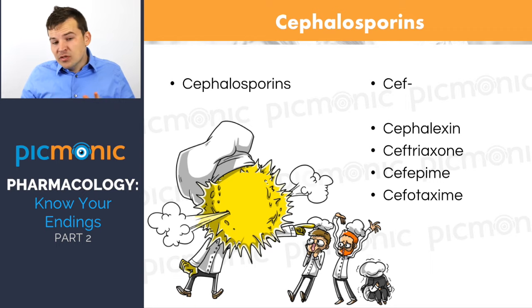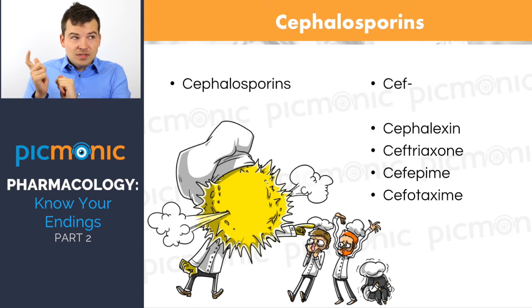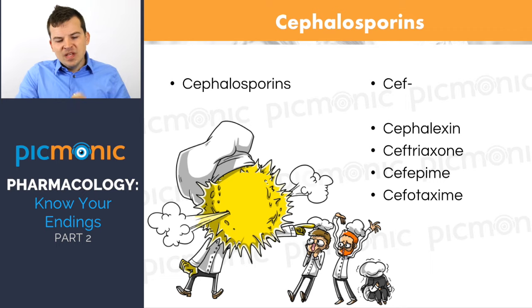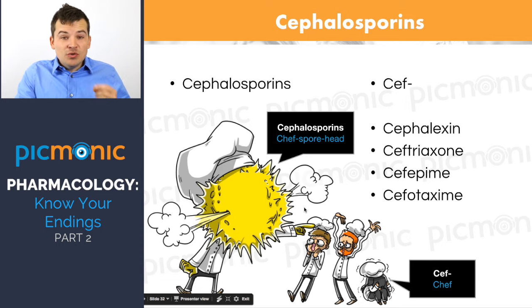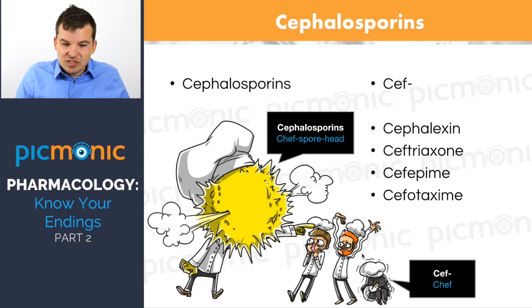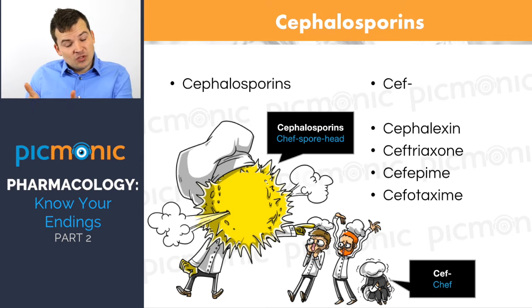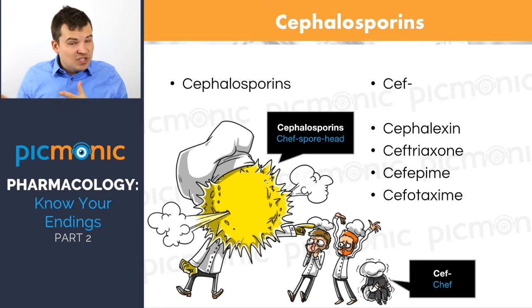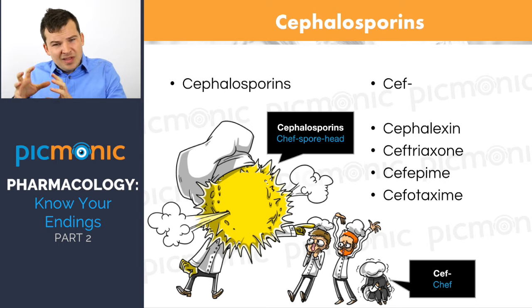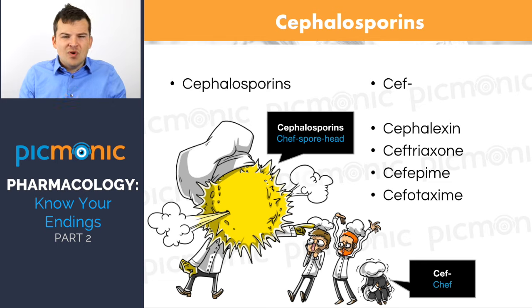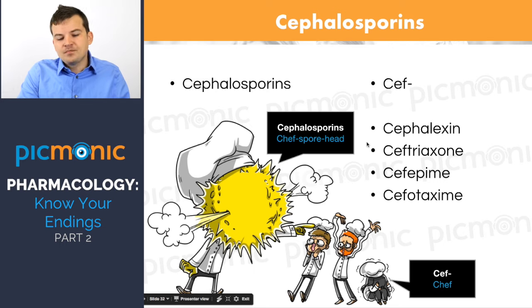The next class is cephalosporins. There are five generations. You can identify them by the prefix 'ceph-' (C-E-F). In Picmonic, we have a 'Chef's Spore Head' character. Examples include cephalexin (chef flexing), ceftriaxone (chef with three axes), and cefotaxime (chef taxes). Cephalosporins start out covering gram-positive organisms and advance to broader coverage, with fifth-generation drugs like ceftaroline being newer and covering more organisms.